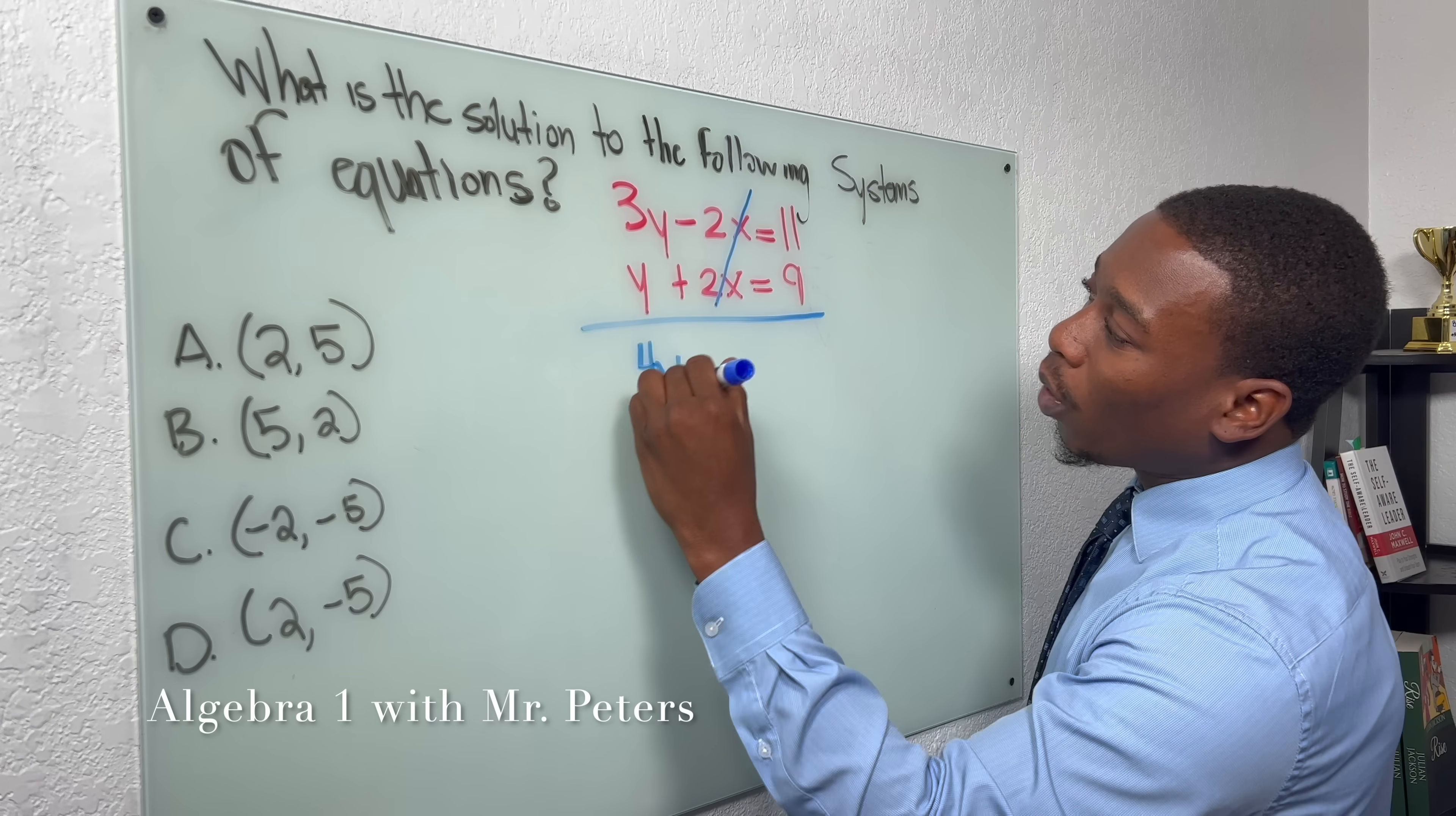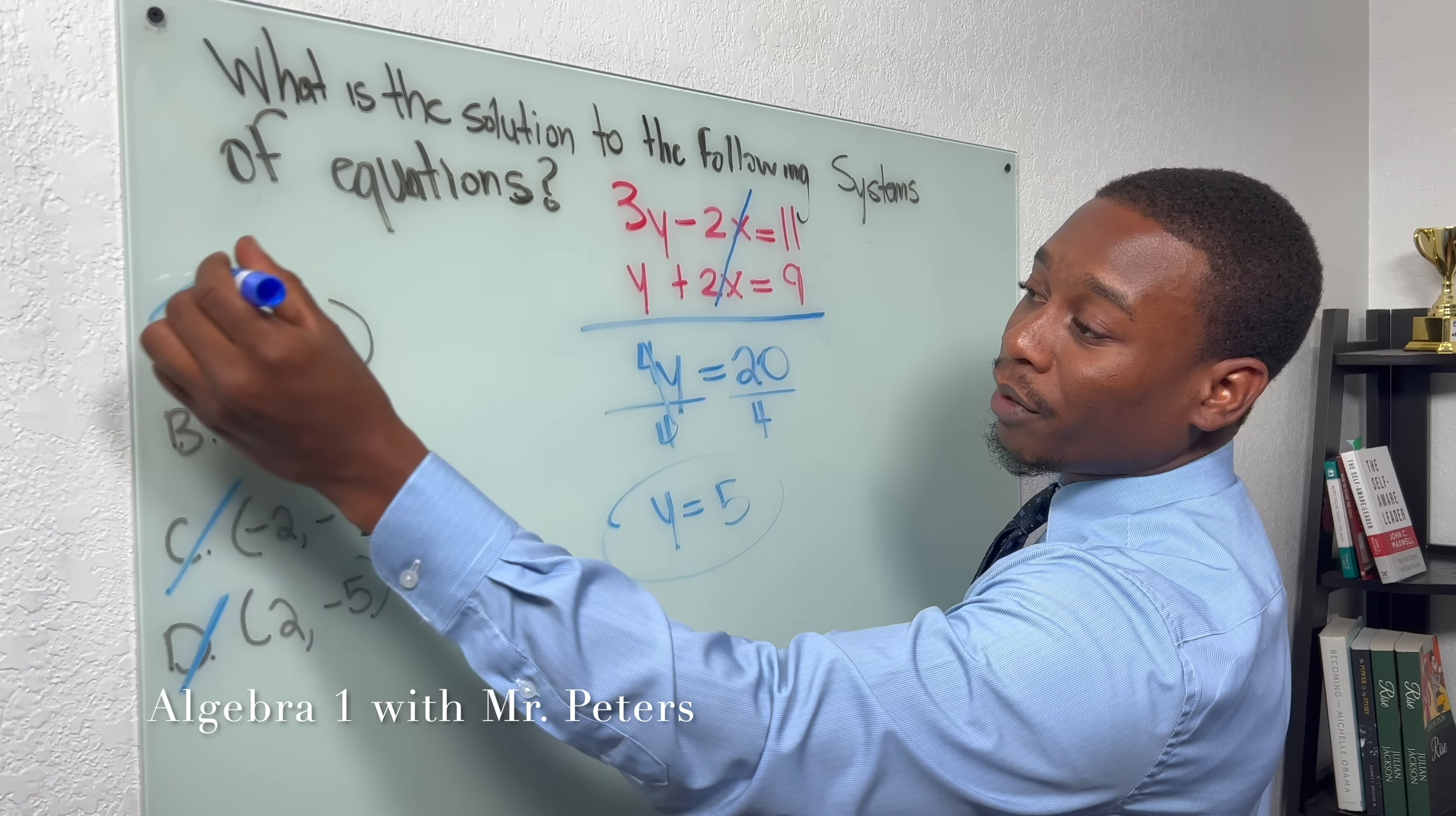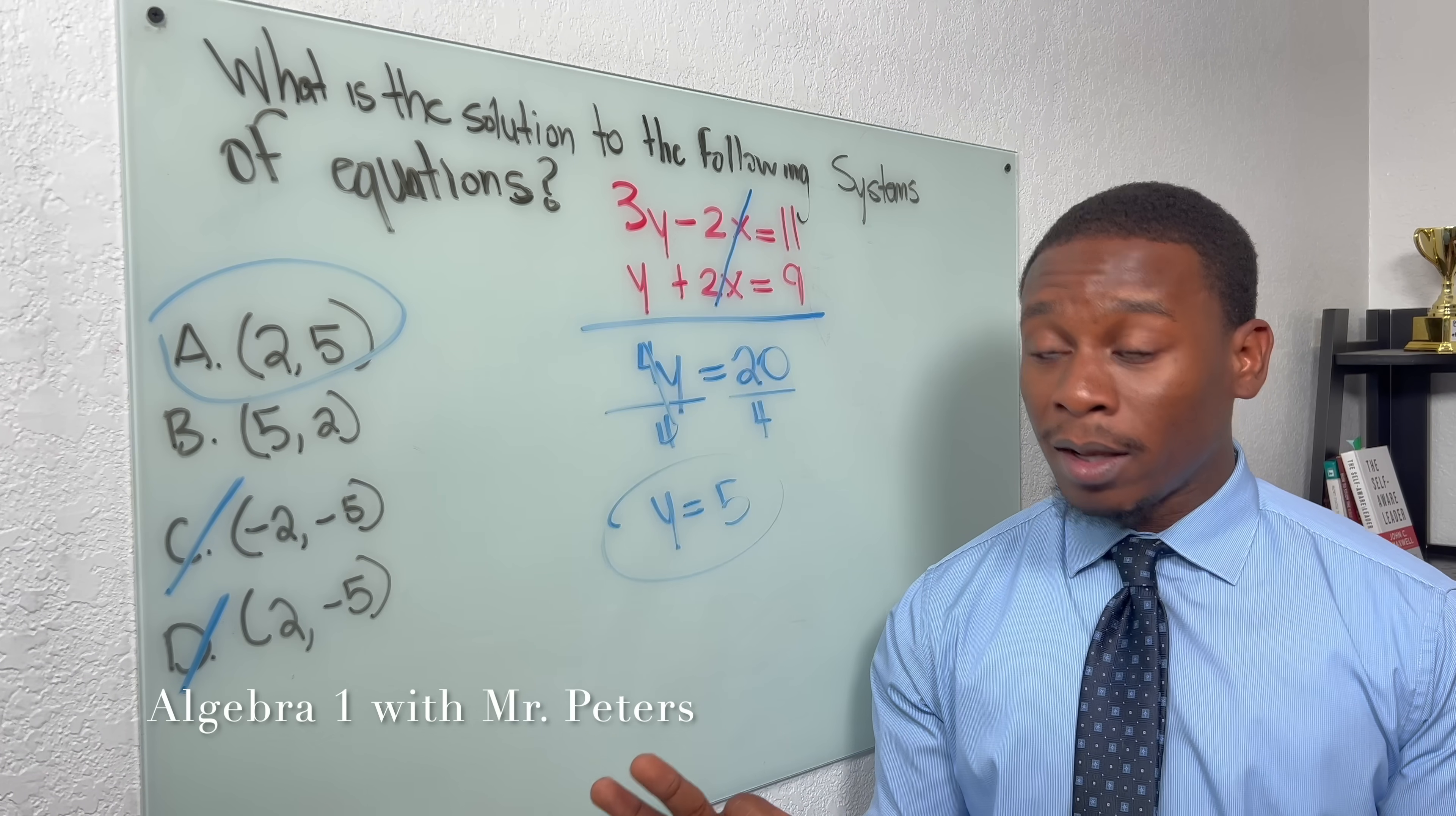So we're going to have 4y is equal to 20. Once we divide, we're going to get y is equal to 5. So now just remember, right, the only answer where y is positive 5 is A. So just by solving, we already figured out our answer, but they wanted you guys to think that this was the x-coordinate, right? They wanted to confuse it with B. So please be mindful of that.